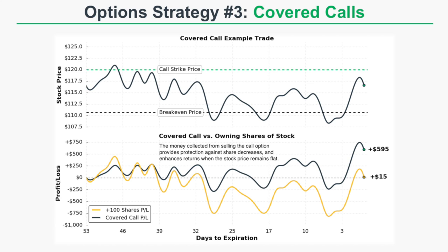The first thing I want to point out about this example is that the stock price only ends 15 cents higher than where it started. For an investor who owns 100 shares without selling a call against it, that means their profit is going to be $15, which we can see on the bottom part of this graph.